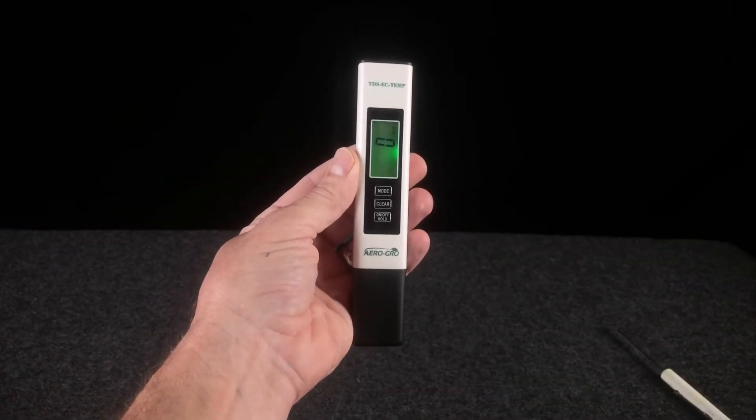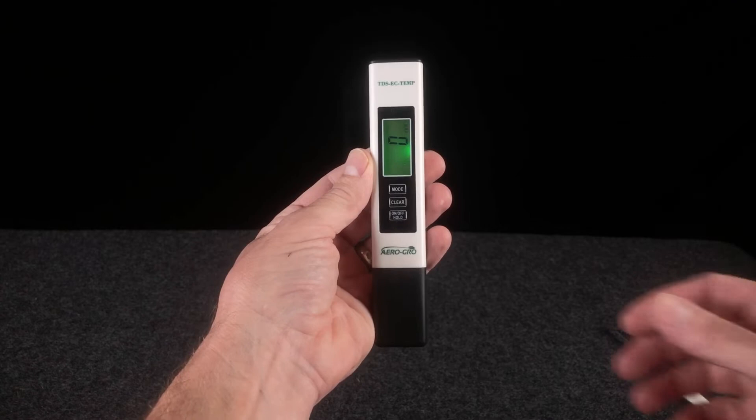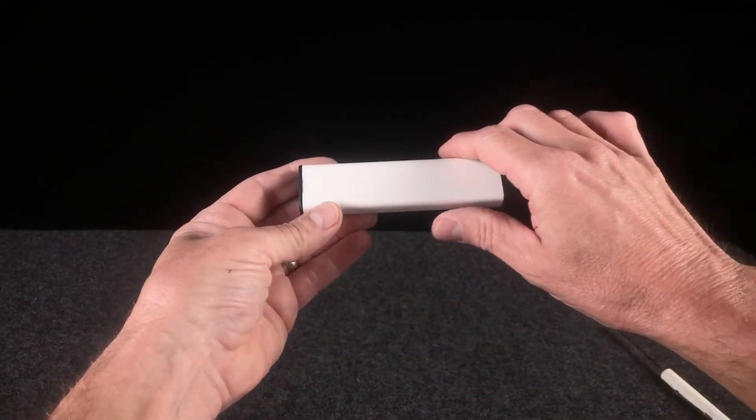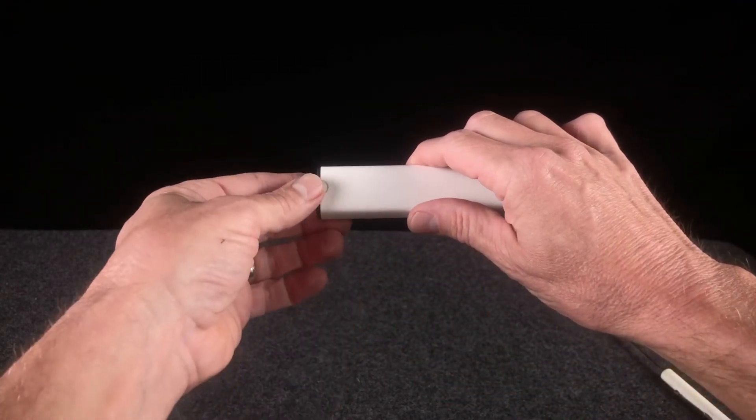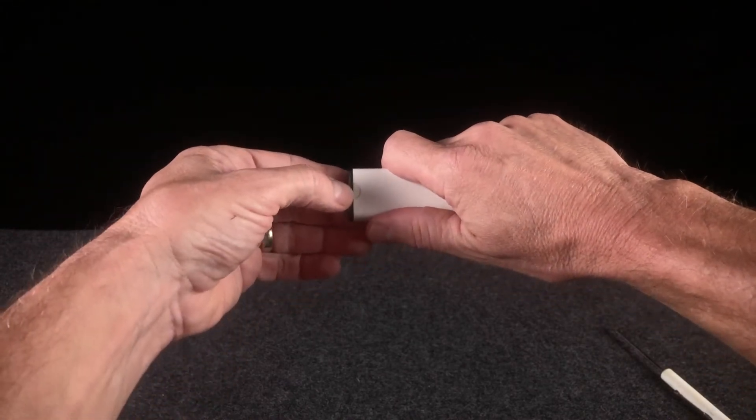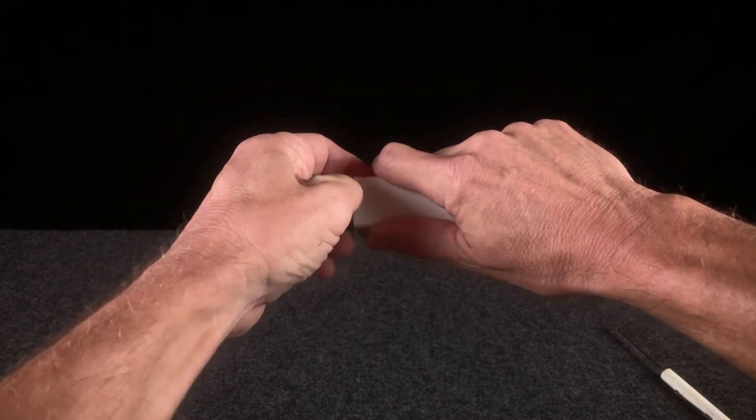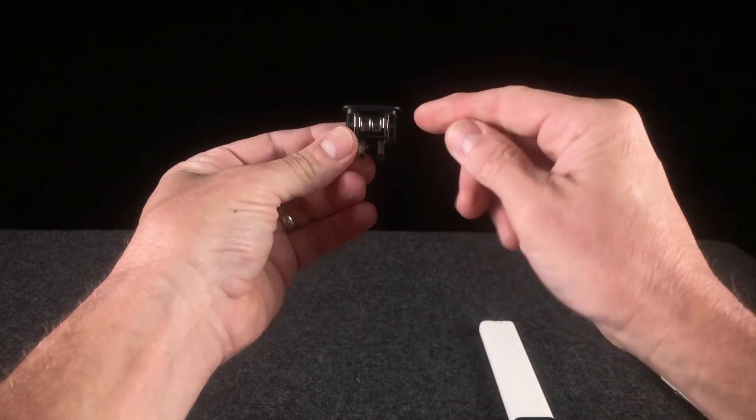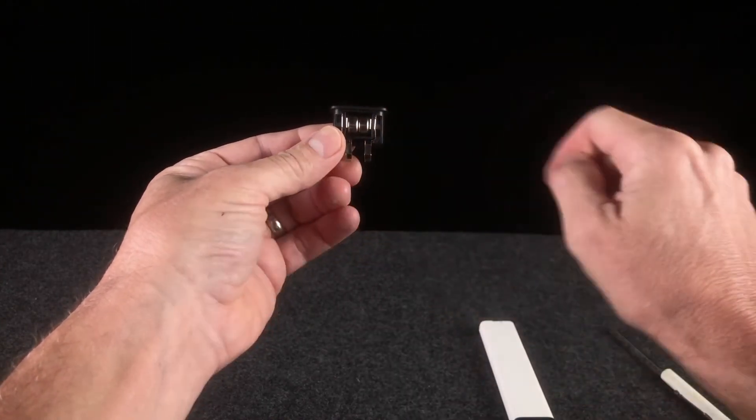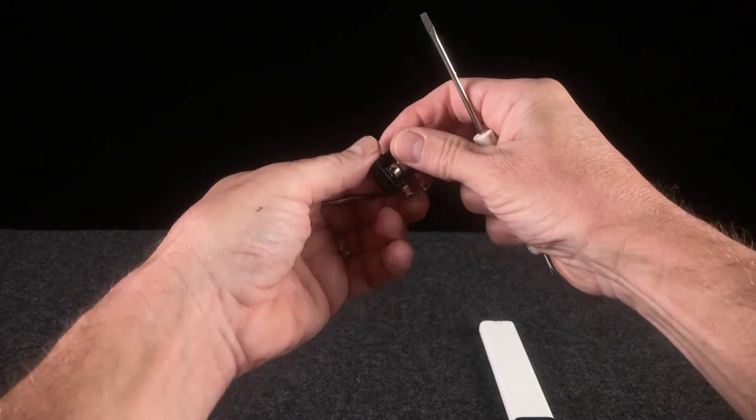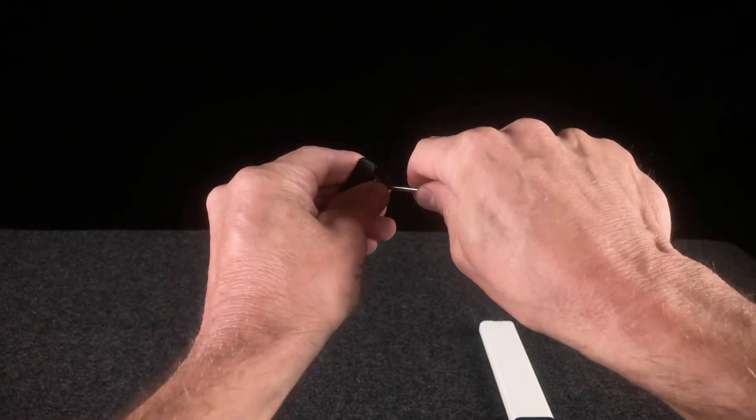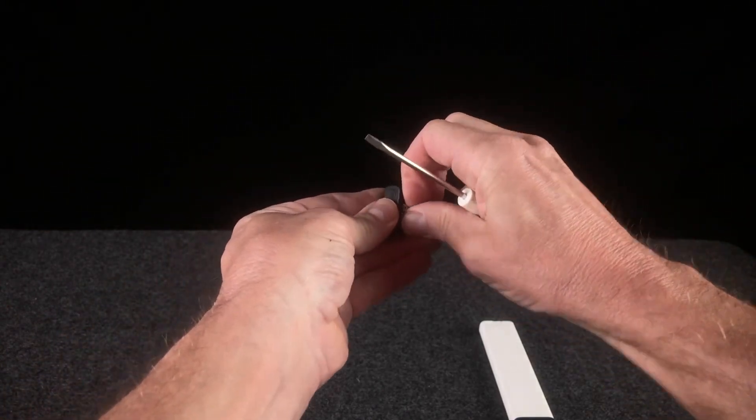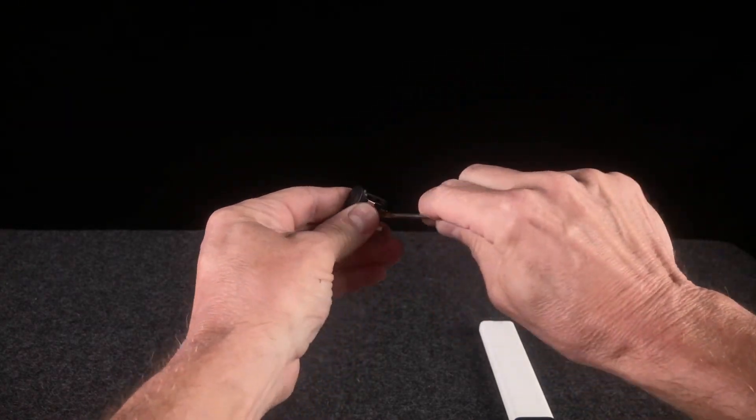Replacing the batteries in your meter is also quite easy. Simply flip the meter over and you'll notice that there's a small indent on the back. Grab the meter firmly with one hand and using your thumbnail, pry out the battery compartment. The battery compartment contains two LR44 batteries. So then using a small tool like a screwdriver, simply pry the batteries out, carefully.